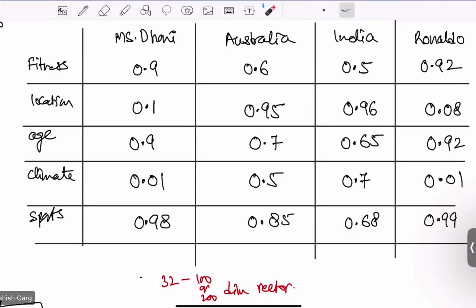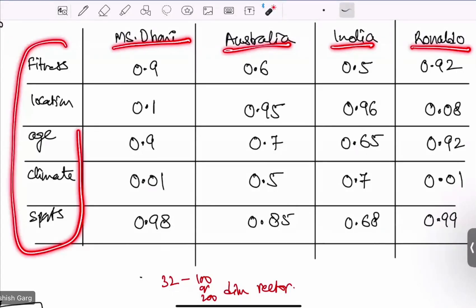For example, look at this table. Now, here I have taken few words: MS Dhoni, Australia, India, Ronaldo. And I have taken some hypothetical matrix, some hypothetical characteristics.